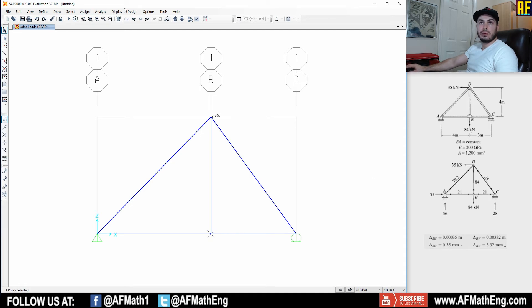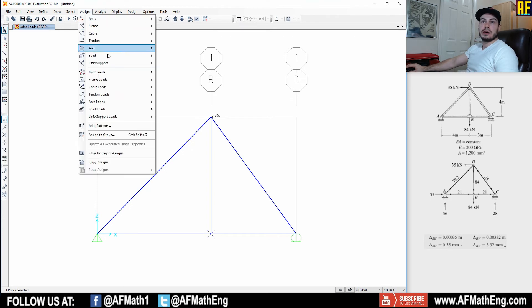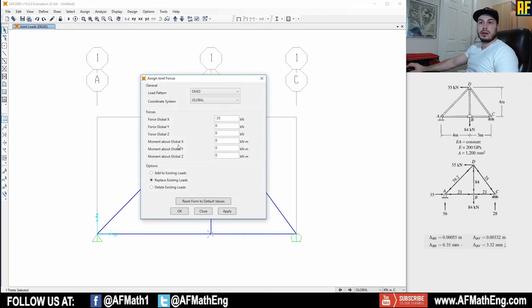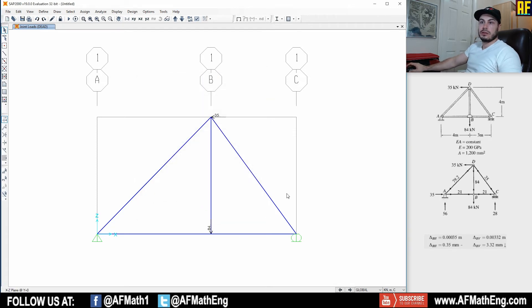Go over to B. We have our negative 84 in the Zed plane, remember Zed X. Assign a joint load there in the Zed. Don't reassign that. Make that zero. I don't know why SAP does that. And we have negative 84. Press okay. Very good.